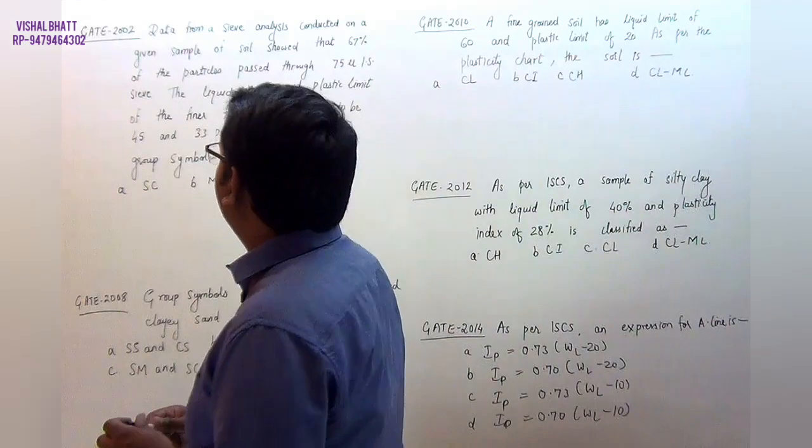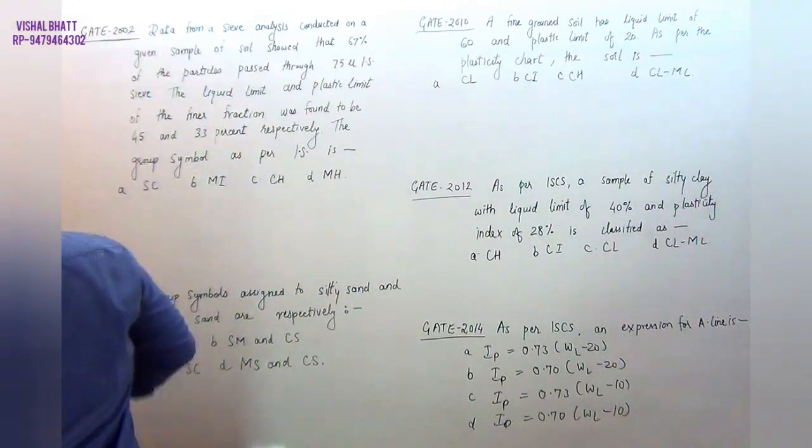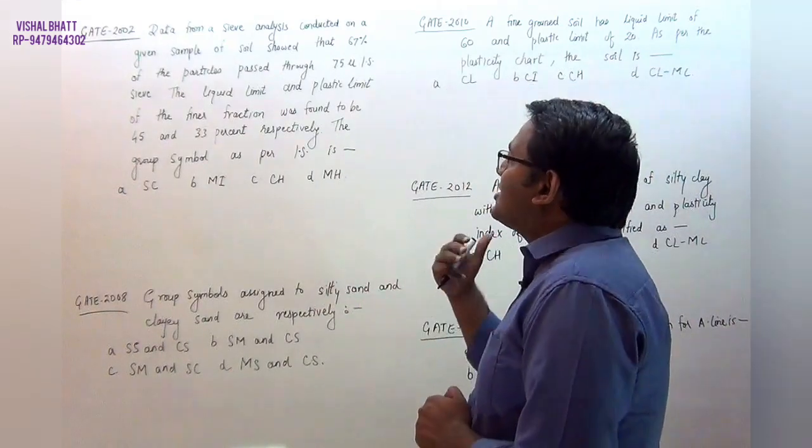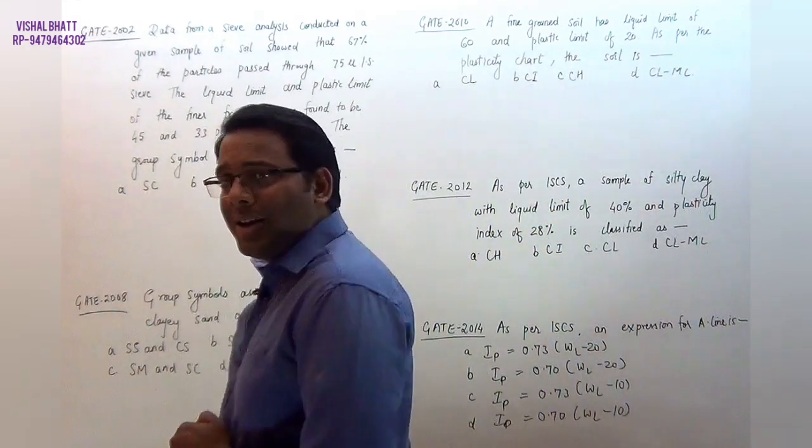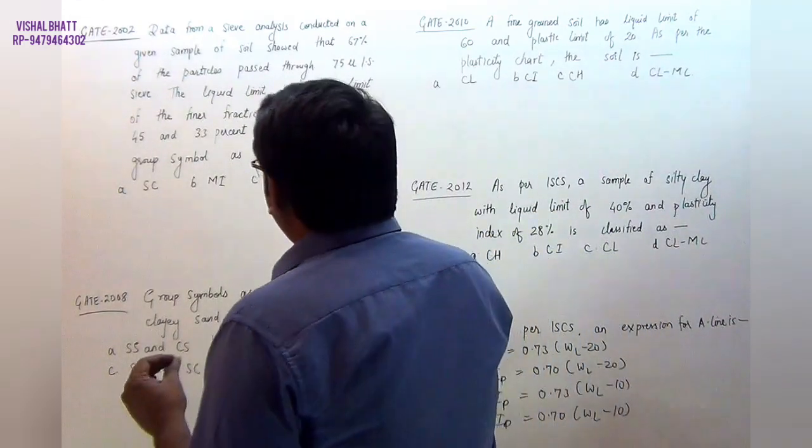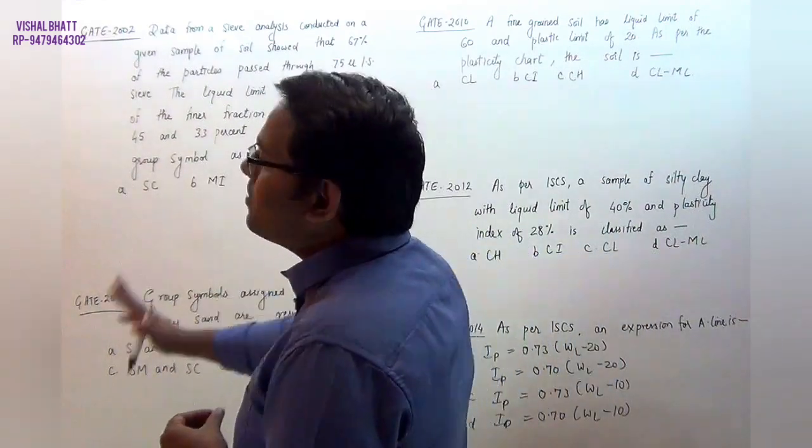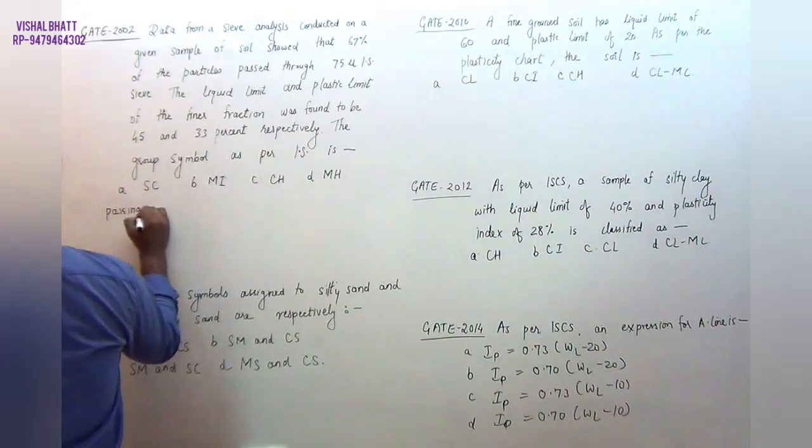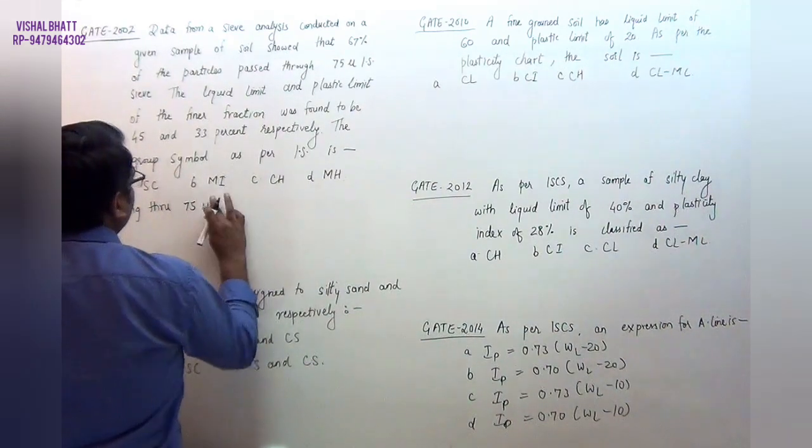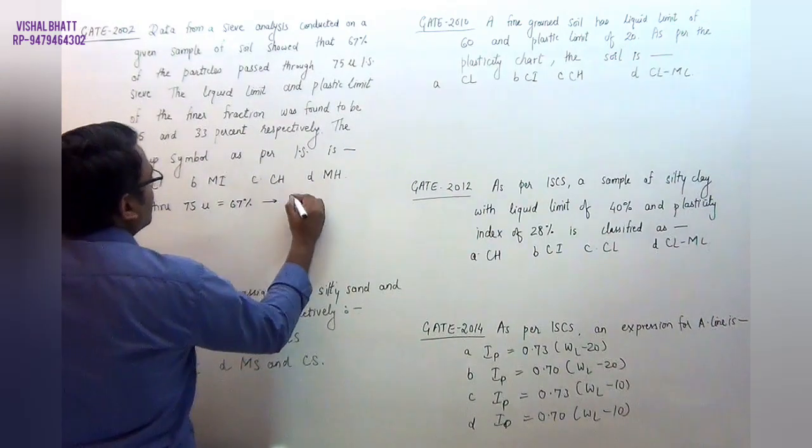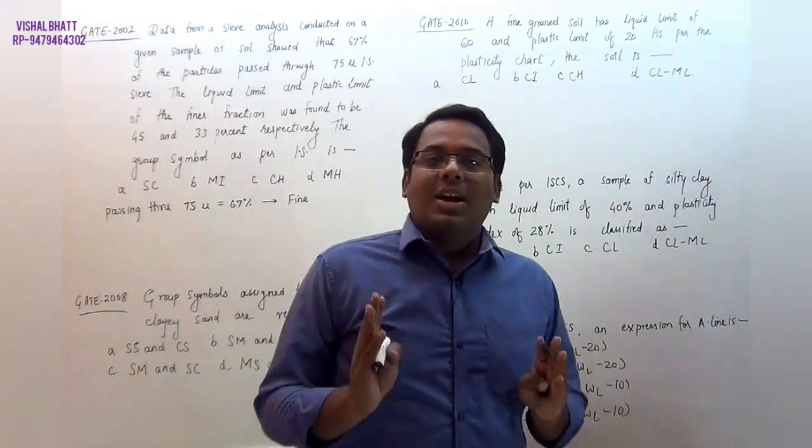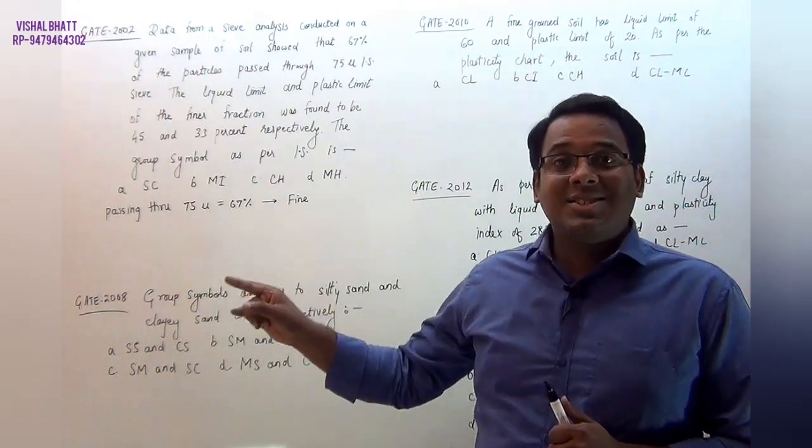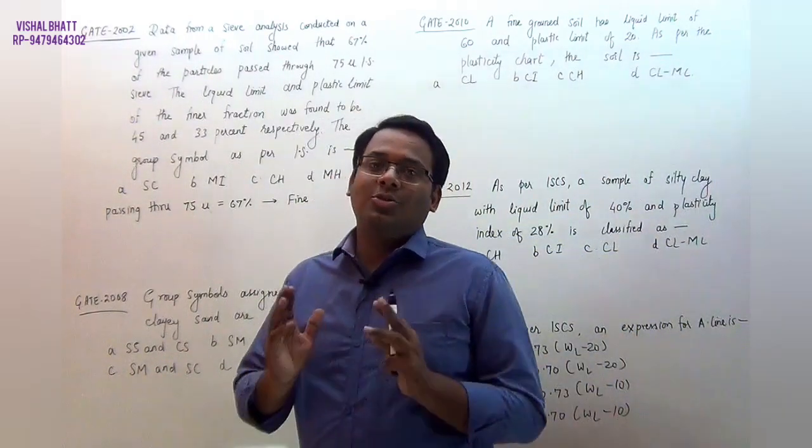Here I have the first question that I have received from GATE 2002. The question states that data from a sieve analysis conducted on a given sample showed that 67% particles passed through the 75 micron sieve. The liquid limit and plastic limit of the finer fraction was 45 and 33 respectively. The group symbol will be. For this particular question, the first thing is that passing through 75 micron is 67%. This means that the soil is fine-grained because all particles which are 75 micron are fine-grained. Since fine-grained is 67%, more than 50%, the soil will be fine-grained.